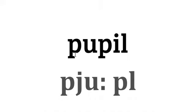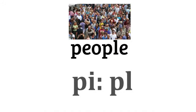This next word is used to address a group of children — we call them 'pupil' or 'pupils.' Now for this word, which refers to a crowd of people, we say 'people.' We do not say 'people's' because the word 'people' itself is already plural. So in the first case we could say 'pupils,' but in this case it remains 'people' — no apostrophe S.